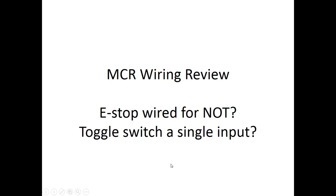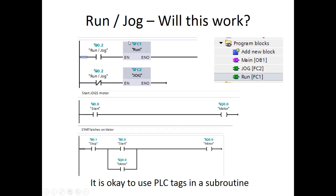For our run-jog examples there were a variety we'll be looking at. We had our e-stop, and our program was wired for a NOT. I want to remind you that you don't need to put a NOT on your e-stop because the e-stop is wired normally closed. If the e-stop was wired normally open, then you might use a NOT, but that's really not the correct application. You would wire the e-stop normally closed and then you wouldn't need a NOT. A toggle switch is a single pole that can switch between input one or input two, but we were using it as a single input — so the toggle switch would either be true or false.